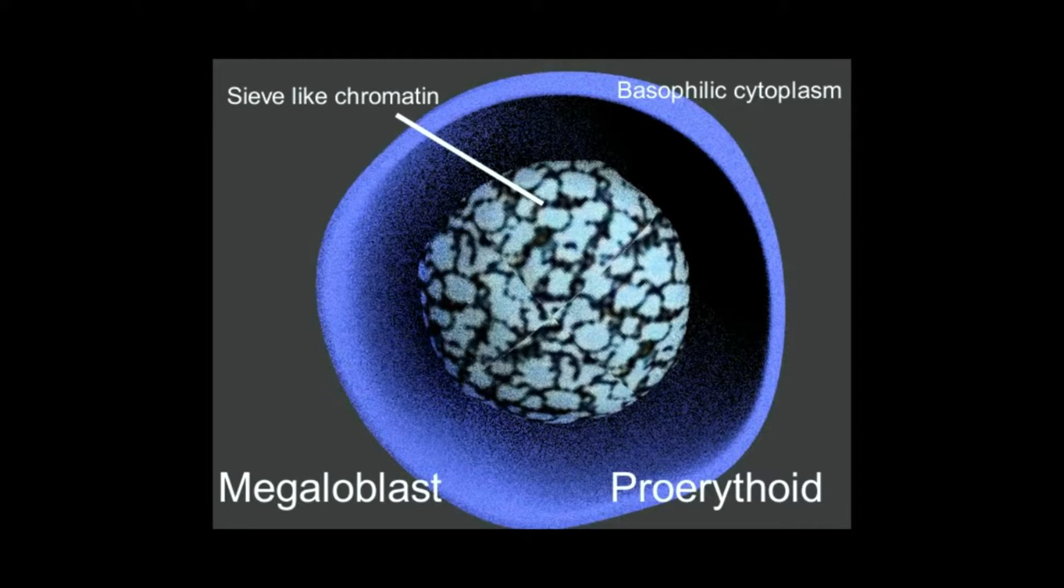Megaloblastic cells are larger than normoblasts and have a delicate, finely reticulated nuclear chromatin and an abundant, strikingly basophilic cytoplasm.